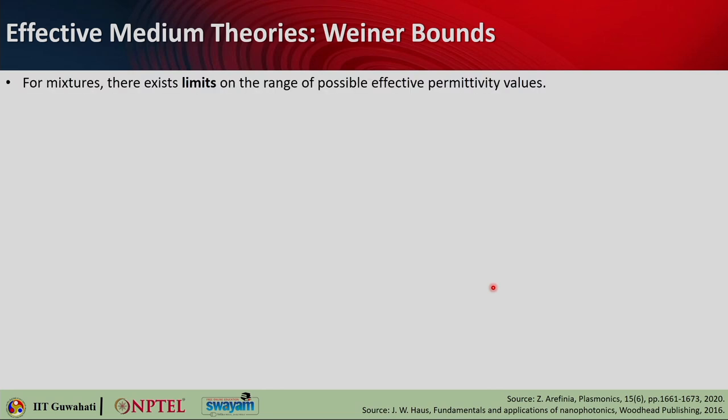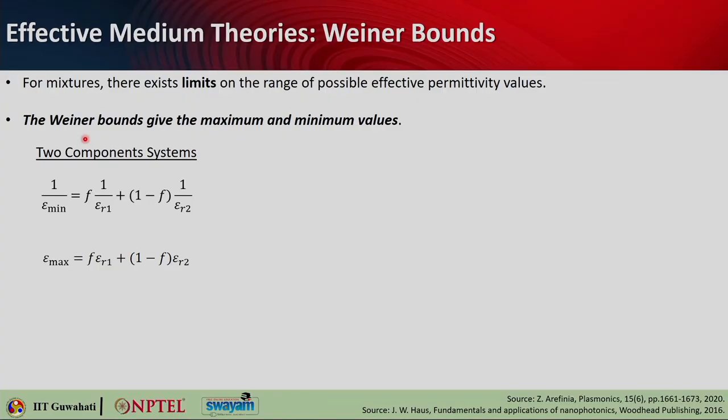For mixtures, there exist limits on the range of possible effective permittivity values. When you mix two or three different materials, you cannot get very abrupt or unrealistic permittivity values. You can actually get effective values which are limited by some upper bounds and lower bounds. Those bounds are known as Wiener bounds, and there are formulas that help you find the minimum and maximum permittivity.